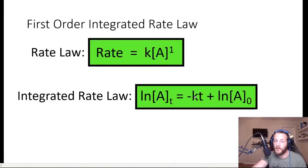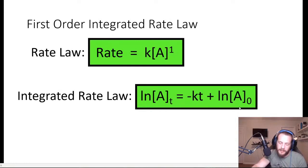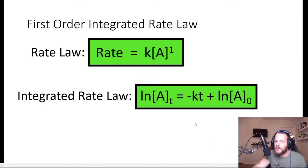Let's look at the integrated rate law for a first order reaction. For the first order reaction, remember the rate law equation is rate equals k times the concentration of A to the first power, or simply the concentration of A. The integrated rate law — and again, I dislike jumping straight to the equation without deriving it, but the calculus is pretty advanced — looks like this: the natural logarithm of the concentration of A at time t is equal to minus kt plus the natural log of the initial reactant concentration.